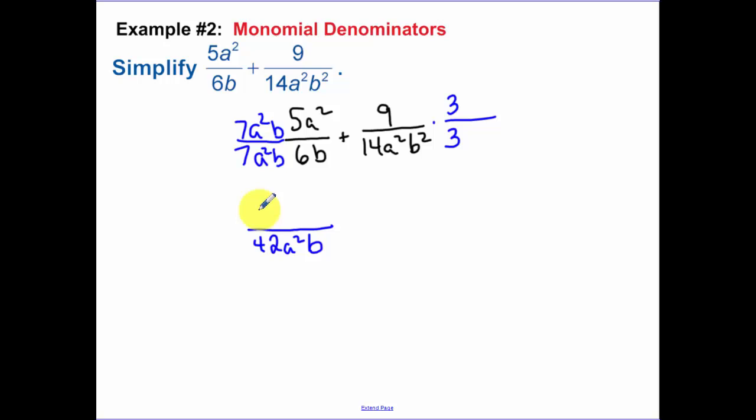I multiply the numbers on the top together, so I get 35a to the fourth b. Our other denominator, that should be a b squared, because I had b times b. 9 times 3, 27. So then we have 42a squared b squared, and then I have 35a to the fourth b plus 27.